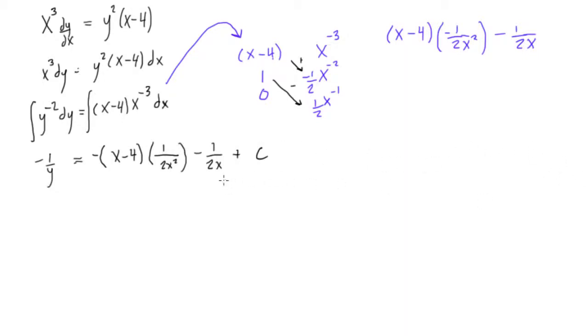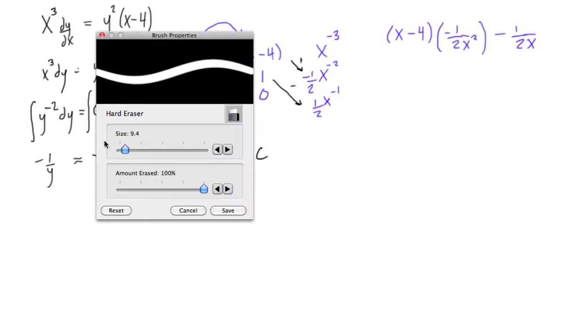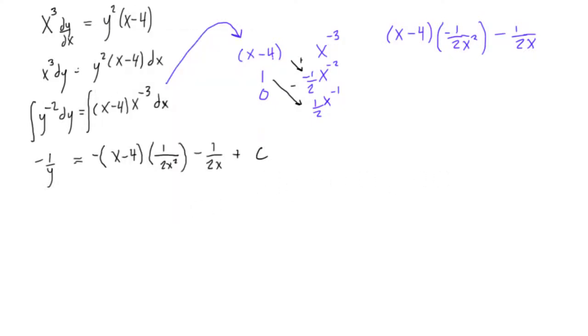All right, so first things first, probably to make our lives easier, we should just multiply everything by negative 1. So that'll get rid of that, it'll get rid of that. This will become positive. And this is an arbitrary constant, so it doesn't matter if it's plus or minus, because we don't even know what this number is.